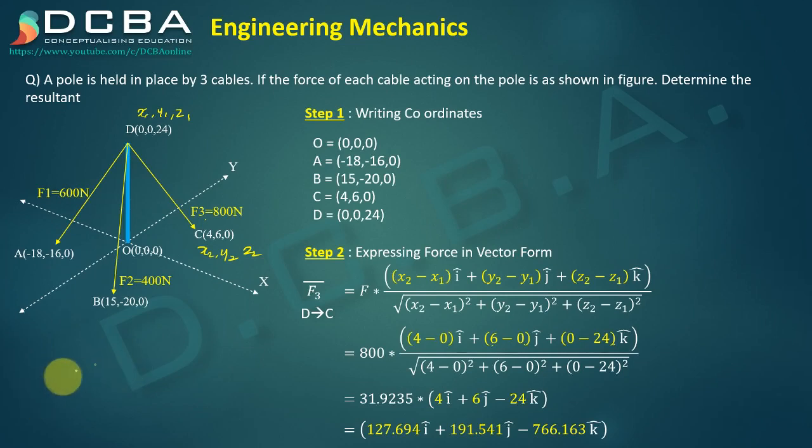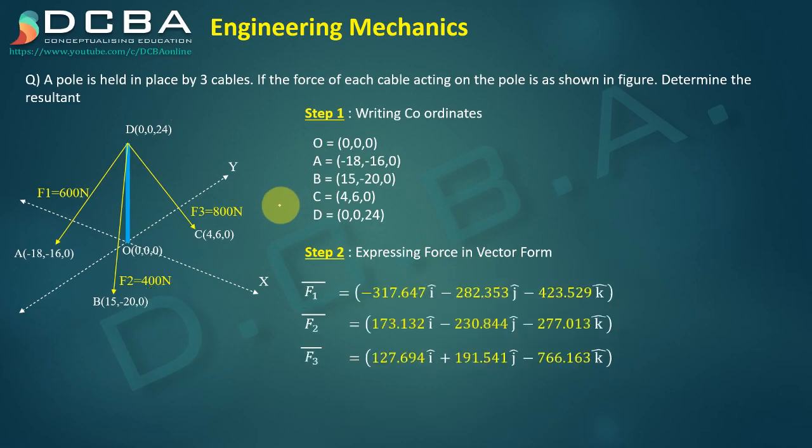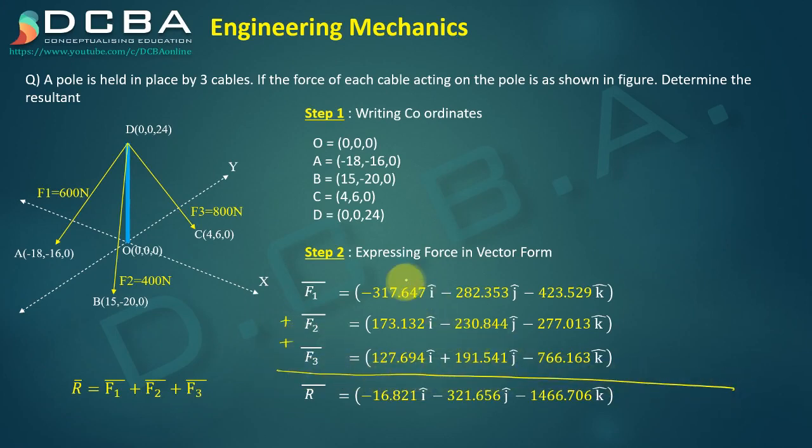Now at this point we have expressed all our forces in their vector formats, we just have to add them up to get the final resultant. So these are all your forces. Resultant is F1 bar plus F2 bar plus F3 bar. When you add these up, you will just have to add their i components.